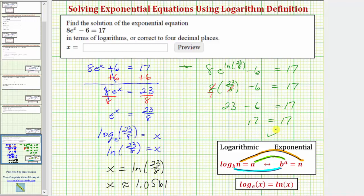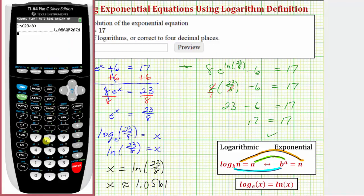Let's also check this using the calculator by entering the left side of the equation here, just to make sure it's equal to 17. So we'd have 8, second natural log brings up e raised to the power of, then the exponent is ln(23/8), close parenthesis, right arrow, minus 6, enter. And notice how we do get 17.